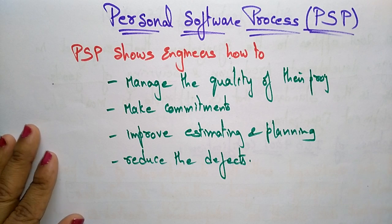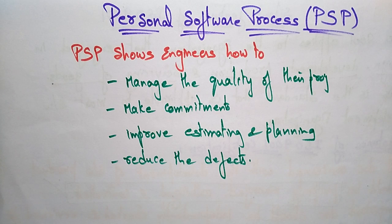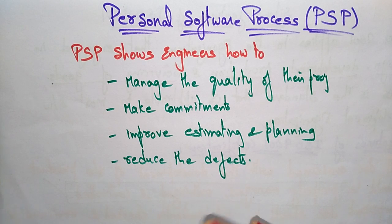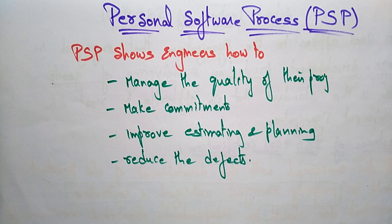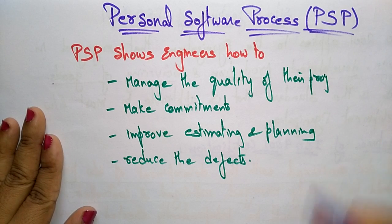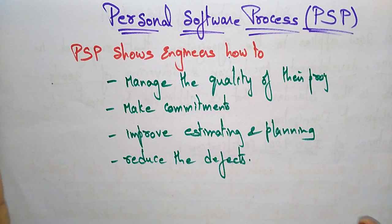The Personal Software Process emphasizes the need to record and analyze the type of errors you make, so you can develop strategies for eliminating them. These are the points engineers have to follow while designing the product.